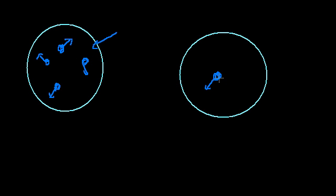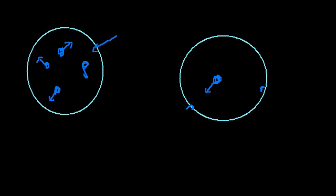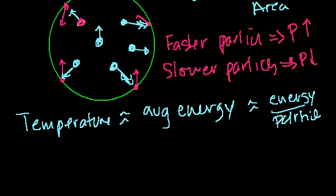Then in this example, this guy's going to bounce, bam, then he's going to go and move and bounce, bam. So he's going to be applying less pressure even though his temperature might be the same, because temperature is kinetic energy, or you can view it as kinetic energy per particle.